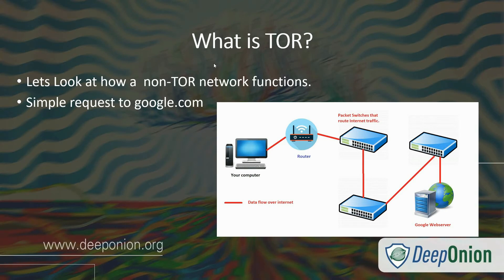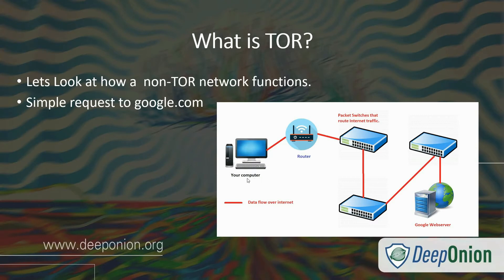Let's talk about what Tor is by first looking at how a non-Tor network functions. In this example, we'll make a simple request to google.com. Your data goes through the router, through internet switches, and finally to Google's web server. If one of those switches or routers has something as simple as a packet sniffer, it can see your IP address, location, operating system, internet provider, web browser, and if the data is unencrypted, also your passwords, emails, video packets, and any other sensitive information.